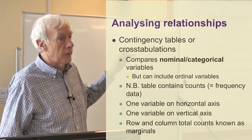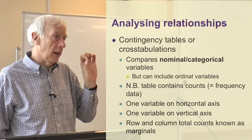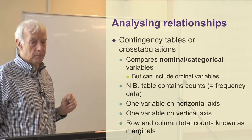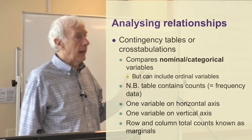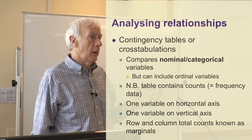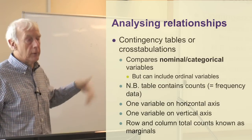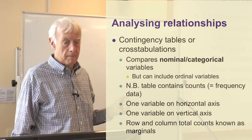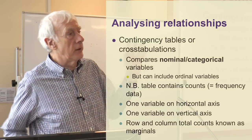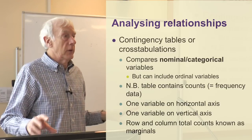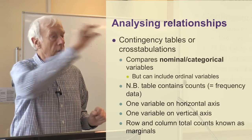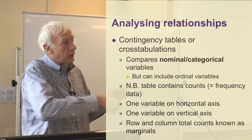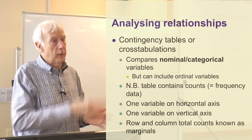The table contains the counts or frequencies of those individuals. Any particular cell contains the number of individuals that fall into that column and that row. One variable is spread across the horizontal axis, with different columns representing different values of that variable, and the other variable is spread across the vertical axis with different rows. In the margin — on the right-hand side and the bottom of the table — we have counts of the total number of people for each row and column.